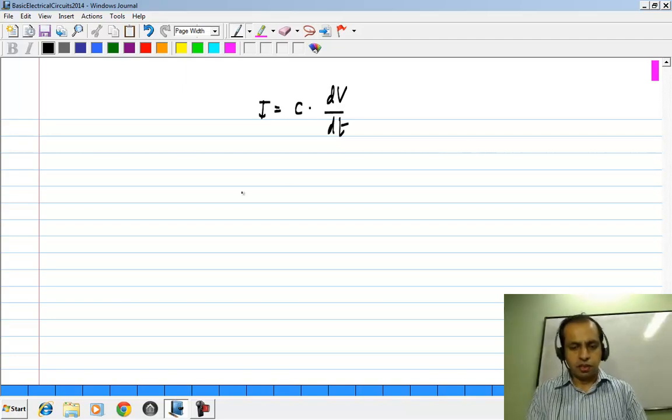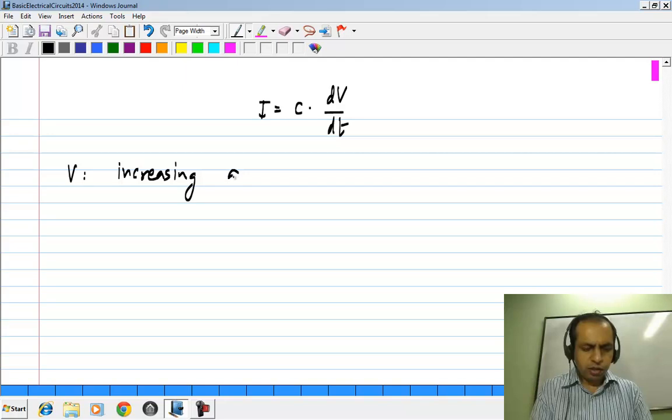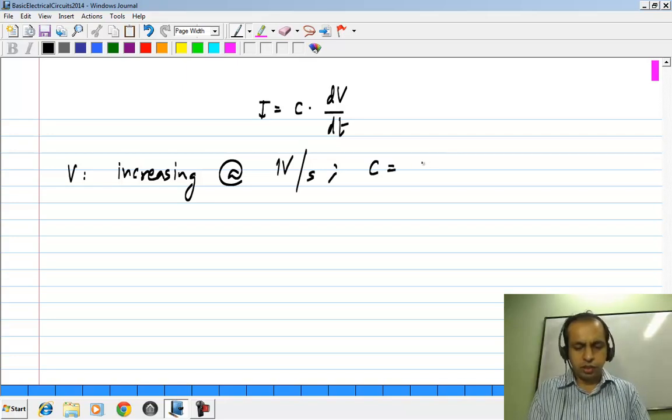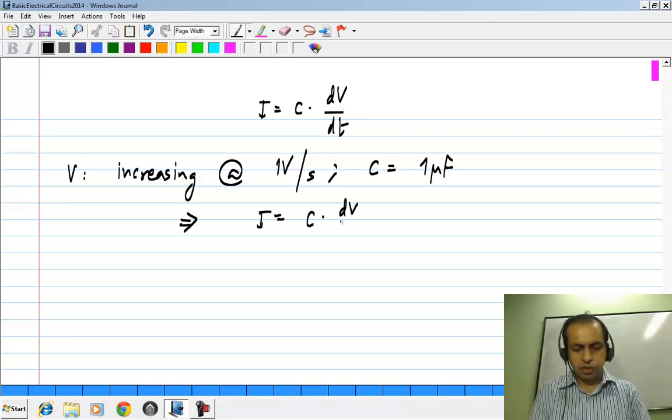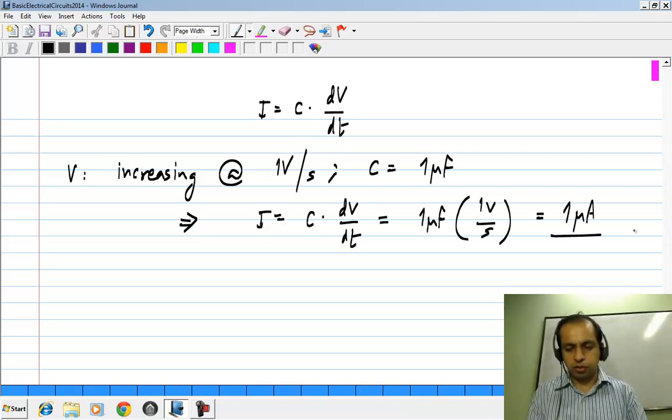Now what does this say? If V is increasing at the rate of let's say 1 volt per second, and C is let's say 1 microfarad, this means that I is C times dV by dt is 1 microfarad times 1 volt per second equals 1 microampere. So 1 microampere current will be flowing through the capacitor.